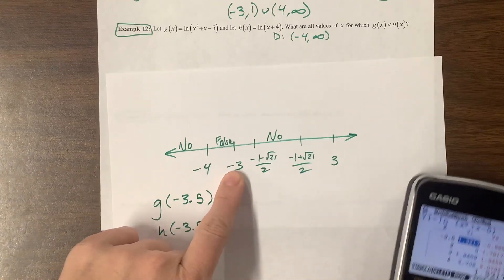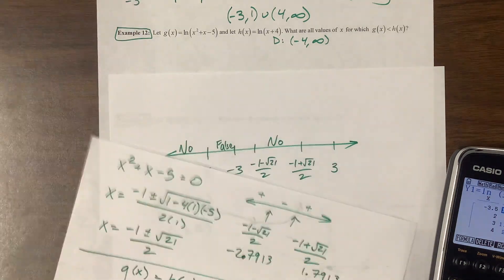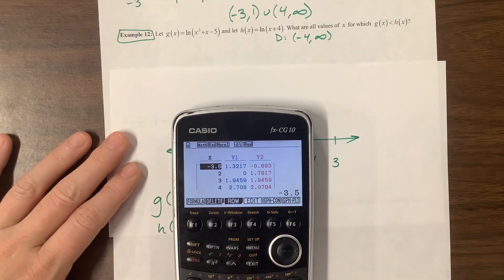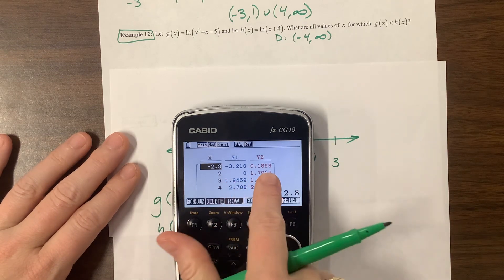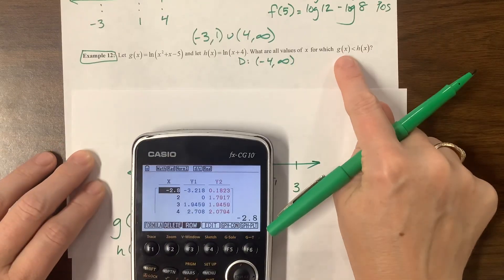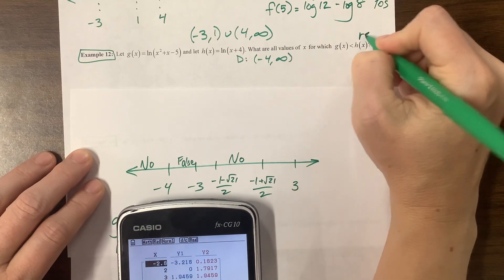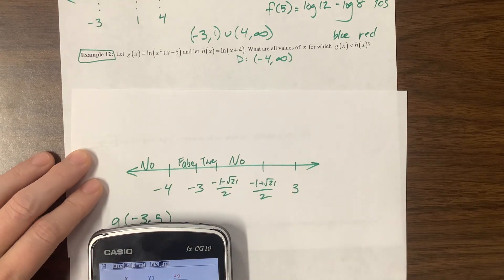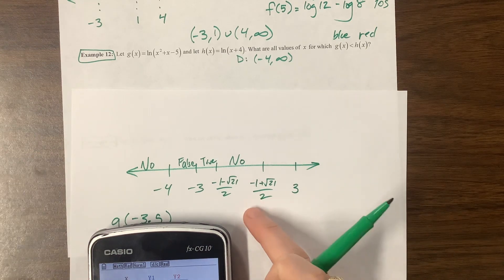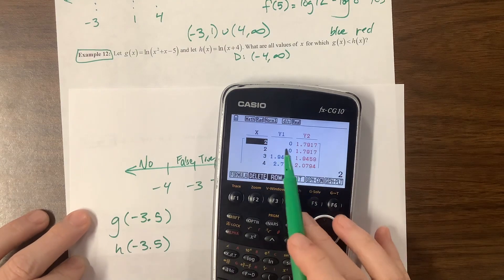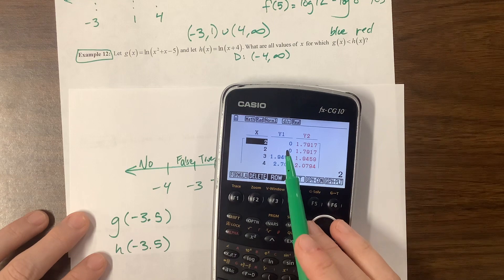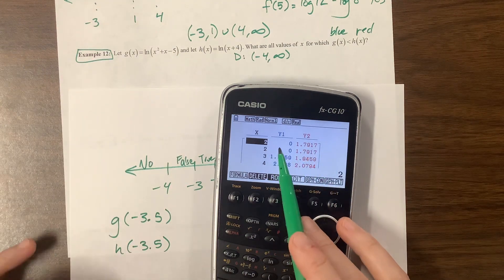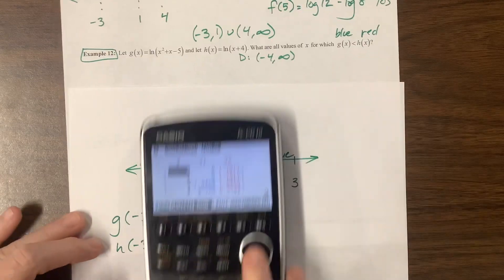Then let's try something between negative 3 and negative 2.79. How about negative 2.8? The red is bigger. This is red and this is blue. So the red is currently bigger than the blue, so true. Then we need something between these guys. This one was 1.7 and this is 3, so let's try 2. Here this one was giving me 0. We wanted, is the red bigger than the blue? Yes, it is. So this piece right here is true.